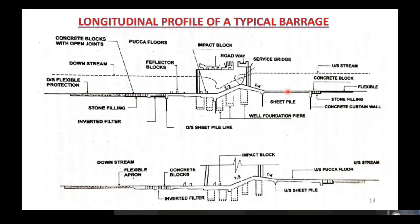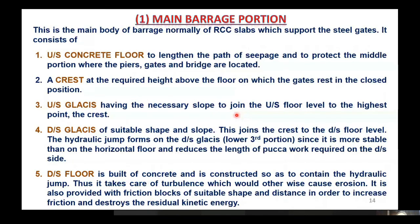The upstream concrete floor is like a concrete slab. There is an upstream sheet pile, a downstream sheet pile, and between them are intermediate sheet piles. There are basically three types of sheet piles: upstream, downstream, and intermediate. Wells or caissons are used for foundations to improve the bearing capacity of the soil during barrage construction.